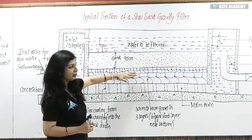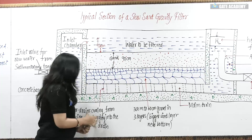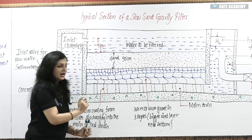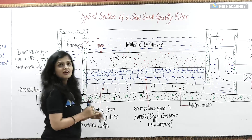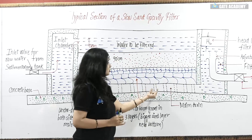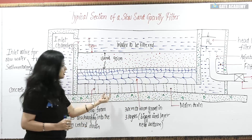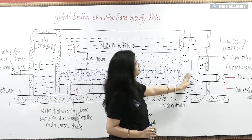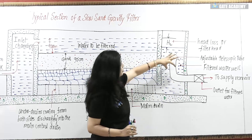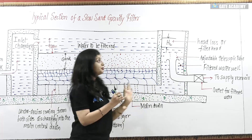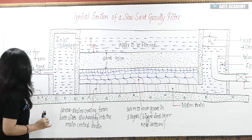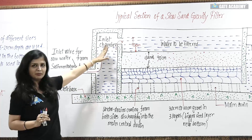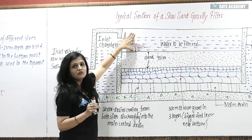You can see the finer gravel at the top and coarser gravel at the bottom. The under drains are 3 to 5 meters apart with a slope provided. These under drains lead to the main central drain, which purifies and passes water to the main drain, and from there it goes to a filtered water well. And then there is a telescopic tube. First, the inlet water from the plain sedimentation tank goes to the inlet chamber, and then this water goes to the filter beds.